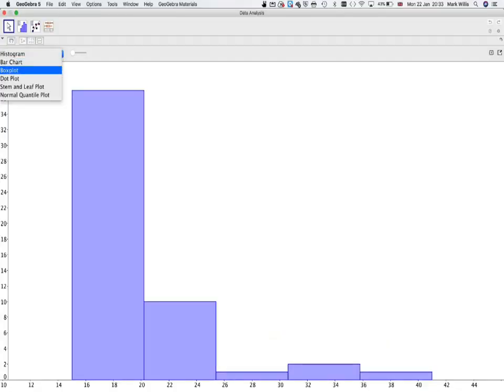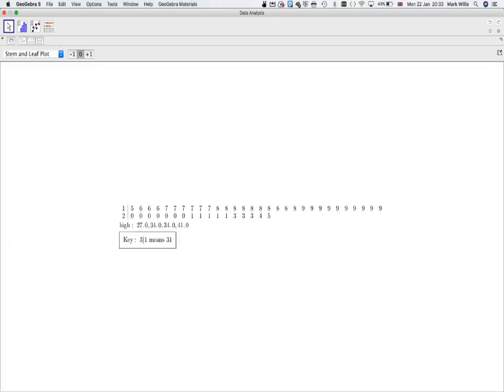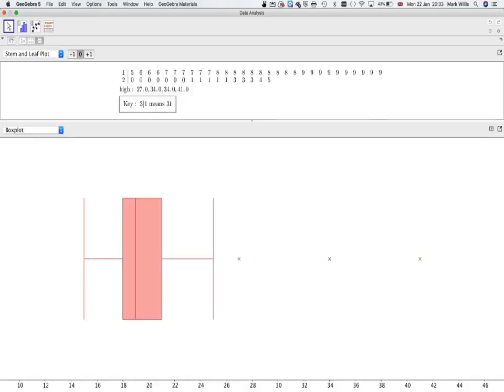And if I select stem and leaf plot. That was our stem and leaf plot that we did before. And if I do this for here, we can separate it. And it will do the box plot with our outliers and everything on and our scale along the bottom.